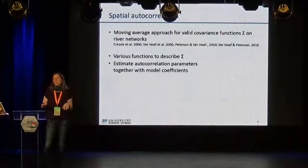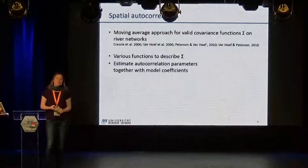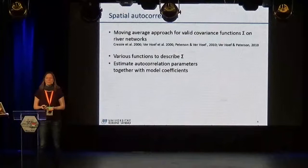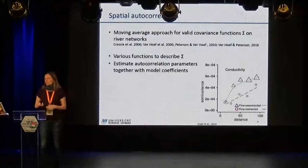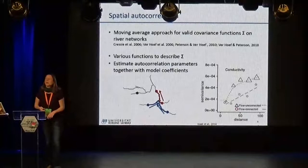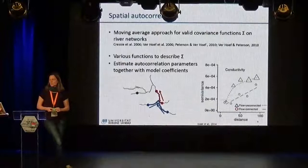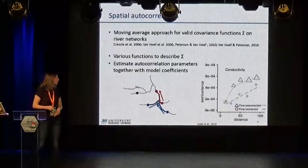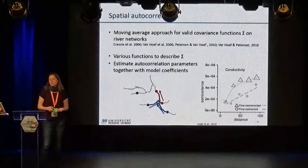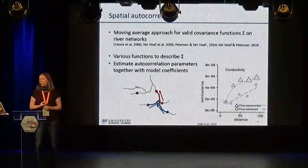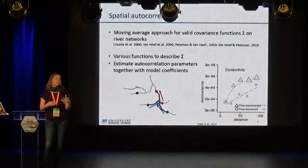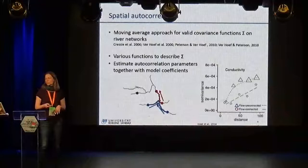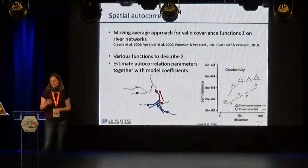Some clever people invented tools to deal with spatial autocorrelation on river networks. They came up with a moving average approach that gives a valid covariance function sigma on river networks, and there are various functions to describe it — it could be linear or curved. When we construct a regression model, we simultaneously estimate this autocorrelative function and estimate the coefficients for our regression model. The dots are the sites that are flow-connected; the farther they are apart on the x-axis, the more dissimilar they become. The same is true for flow-unconnected sites — they are even more dissimilar — and there are two possible fits: a linear one or a curved one.